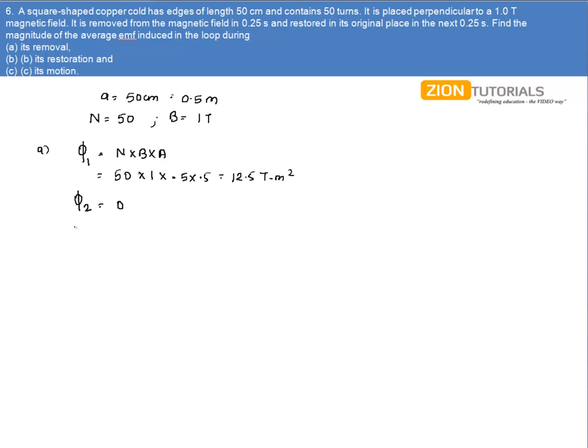The average flux during the removal comes out to be minus dφ by dt, that is φ₁ minus φ₂ divided by time it took, which comes out to be 12.5 divided by 0.25. So on solving, we get EMF induced as 50 volts.